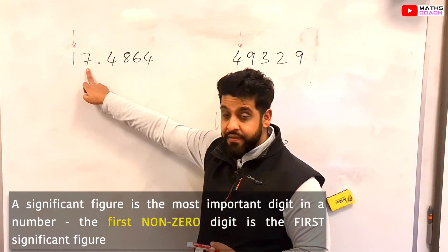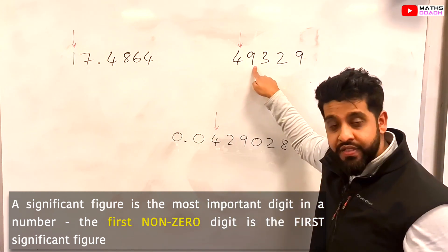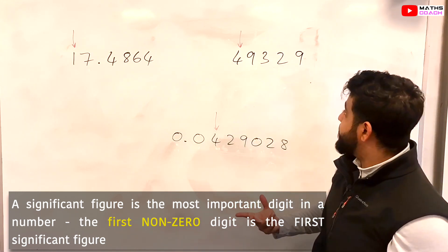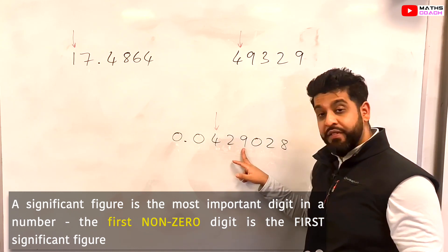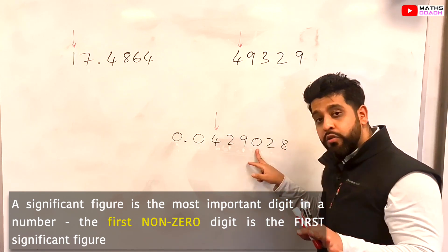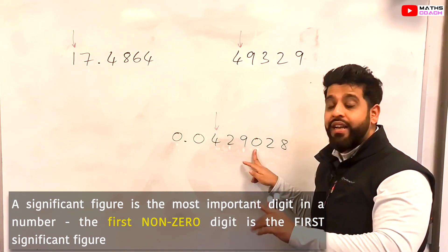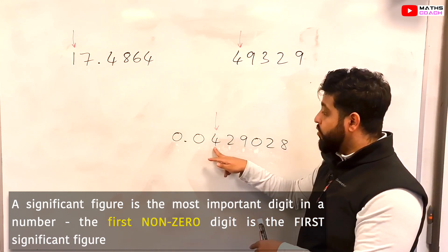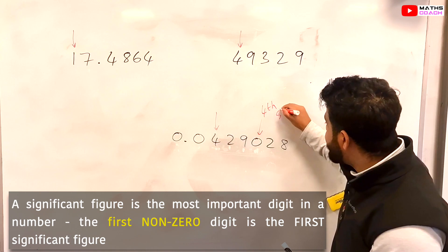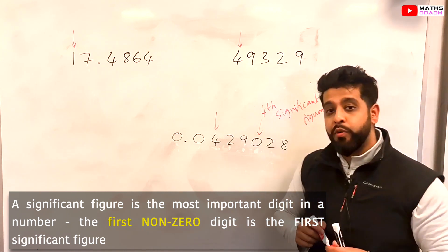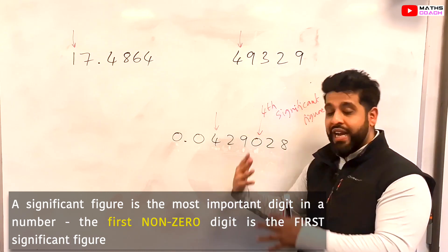In 17.4864, 7 is the second significant figure and 4 is the third. In 49329, 9 is the second significant figure and 3 is the third. In 0.0429028, 2 is the second significant figure and 9 is the third. Now this is an important point: we have a 0 again. If 0 comes first in your number it can't be a significant figure, however if you've already had one non-zero number, then 0 is the fourth significant figure. This is very important to understand — a 0 that appears after you've already had your first significant figure can hold a significant figure placement.